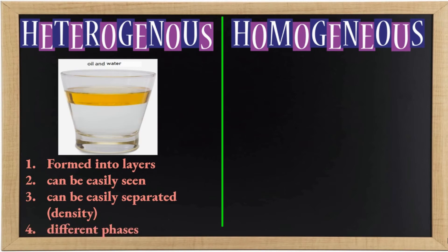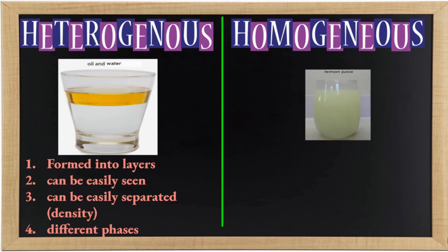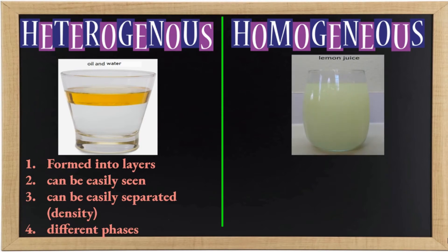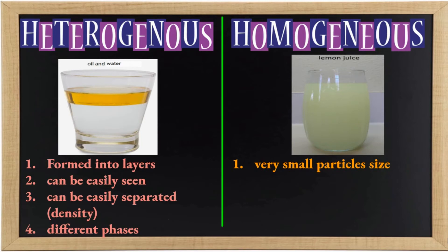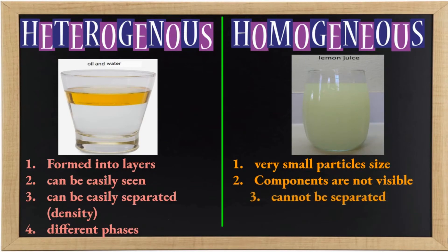Lemon juice is an example of a homogeneous mixture because the particles are small in size, the components are not visible, cannot be separated easily, and the components are in the same phase.